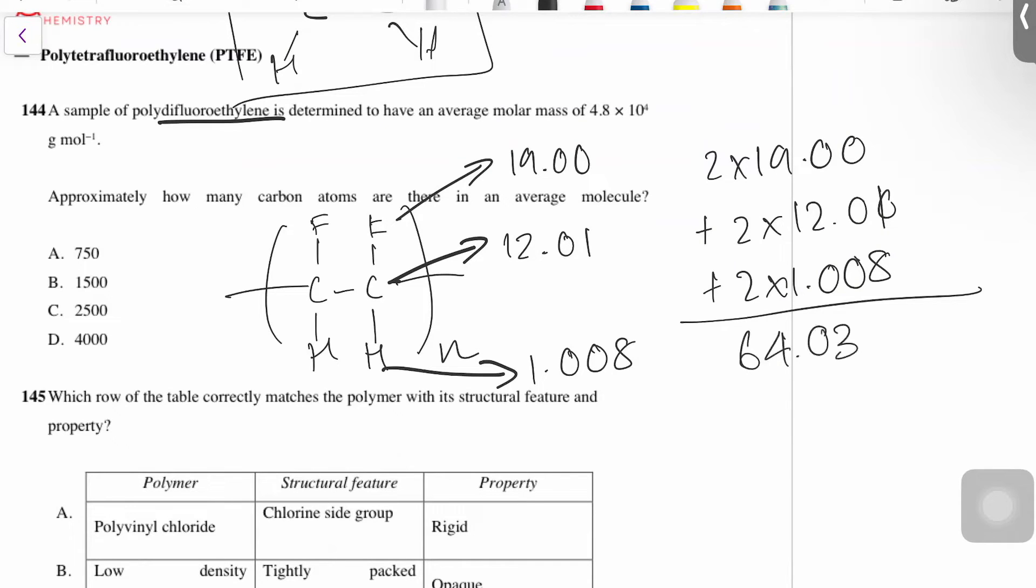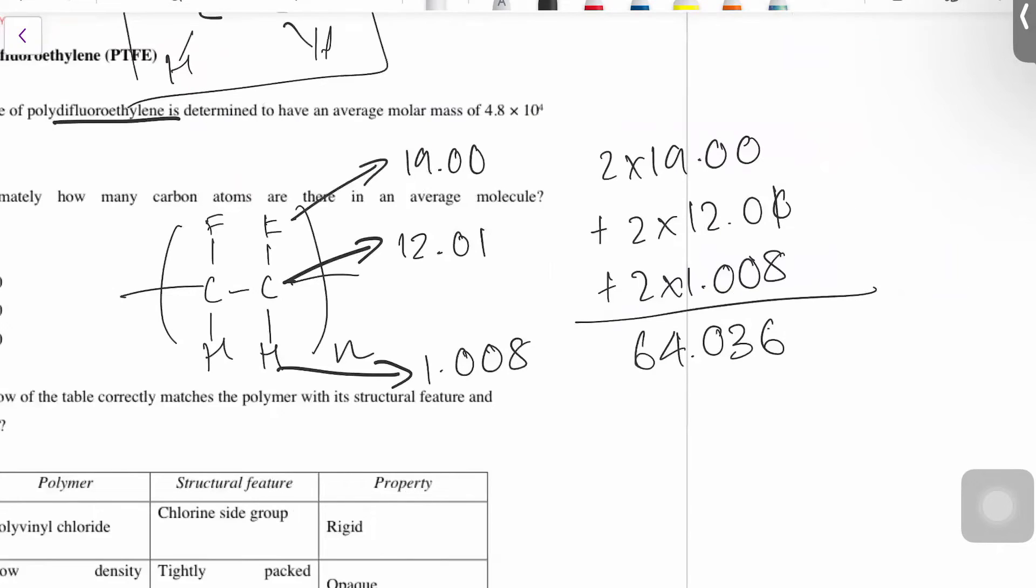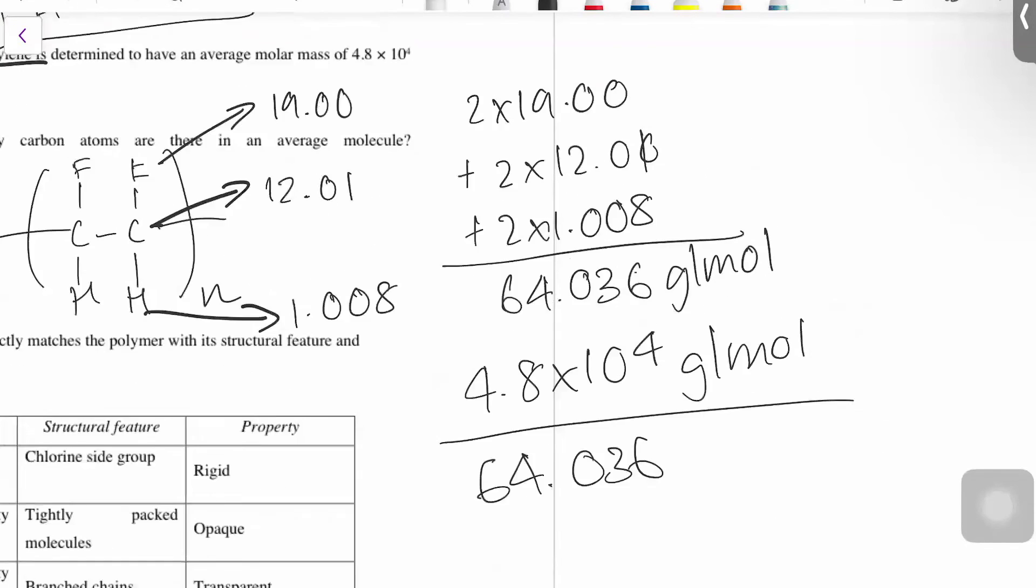64.036. So we've agreed that's the molar mass of your monomer. We want to see how many times that goes into the polymer to see how many monomers we have in that sample that they've given us. So this is grams per mole of your monomer, your molar mass of your polymer, 4.8 times 10 to the 4 that they've given you in the question. So when we do this, we'll see how many times your monomer goes into it.